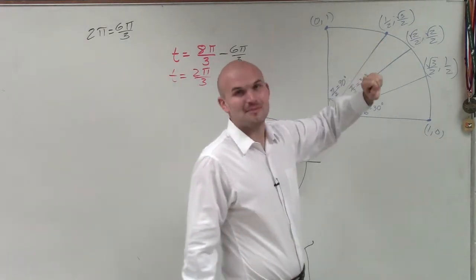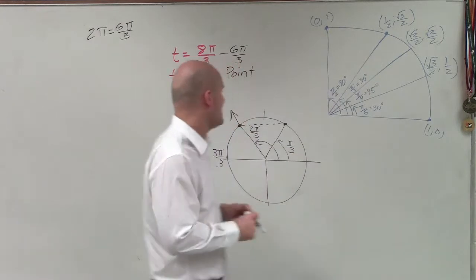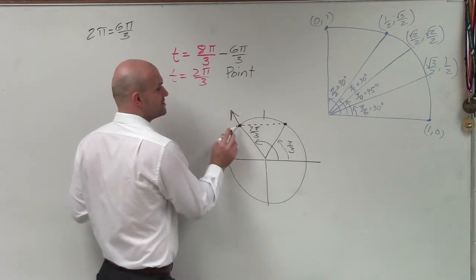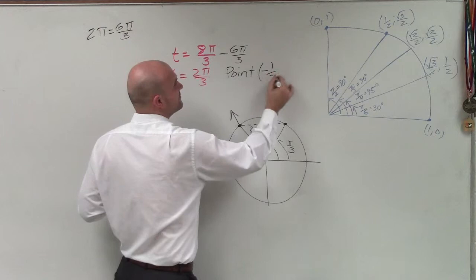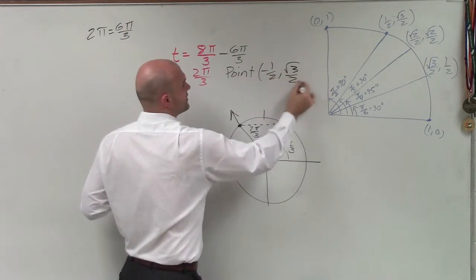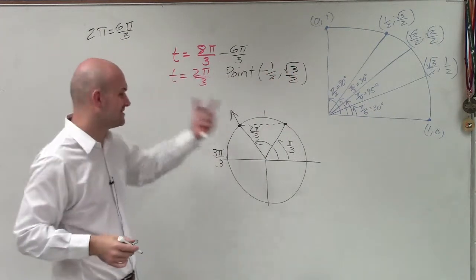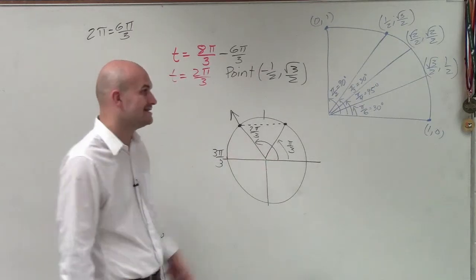That's 1 half comma square root of 3 over 2. And then what I have is now I can reflect this over into the y-axis. So now my point is going to be negative 1 half comma square root of 3 over 2. Because now it's in the second quadrant, so therefore it's going to be negative.